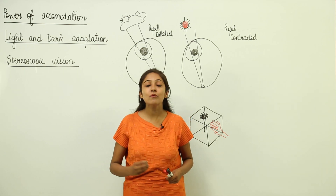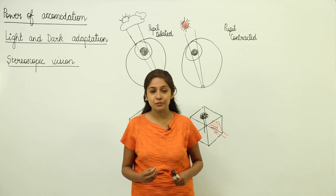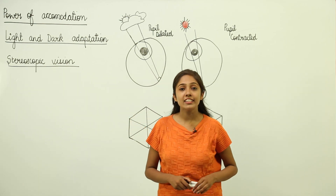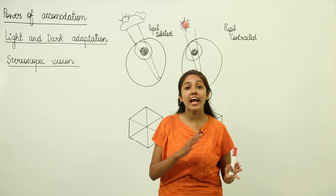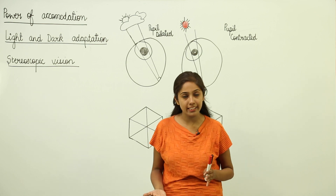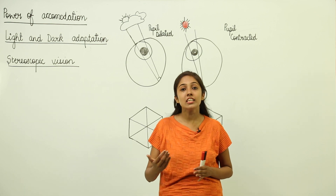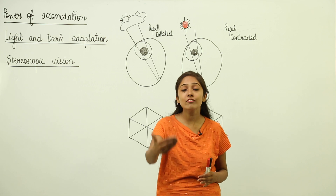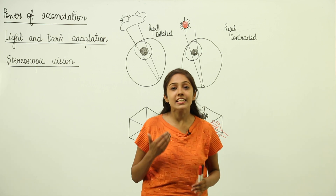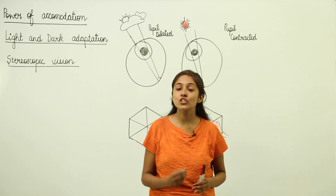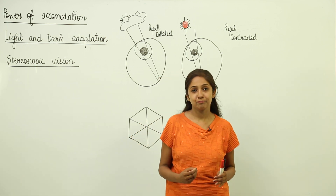Let's discuss the power of accommodation — the ability of your eye lens to actually adjust or change the focal length to see nearby as well as far away objects clearly. This is known as the power of accommodation of the eye.